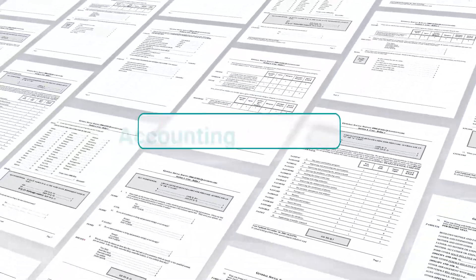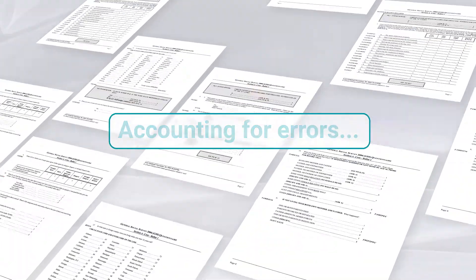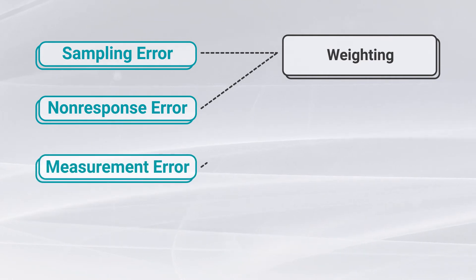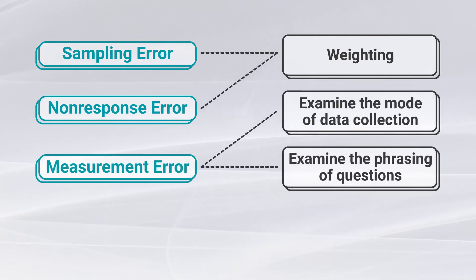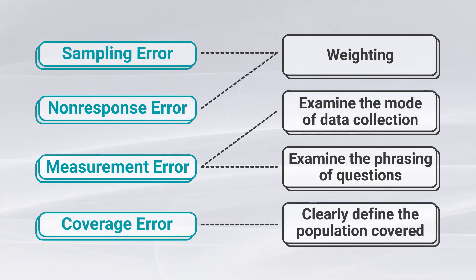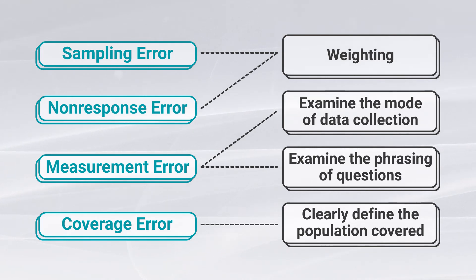There are a number of ways to account for these errors to ensure the highest quality of research. We can use weighting to minimize the impact of sampling and non-response error. For measurement error, we can examine the mode of data collection and the phrasing of questions. And for coverage error, we can clearly define the population covered in the survey. It's important for researchers to be careful in the analysis and interpretation of GSS and other survey results, as these errors exist in all survey data to some degree.